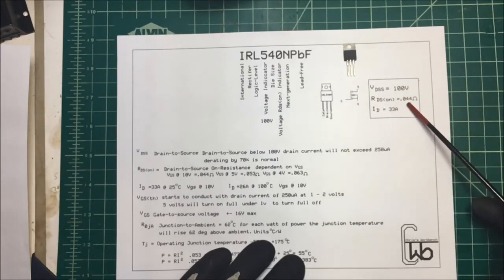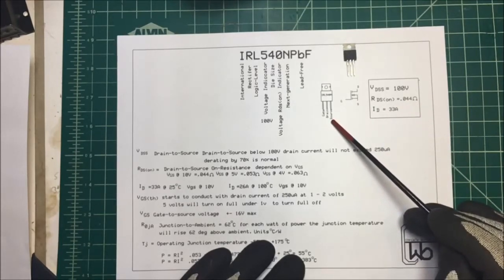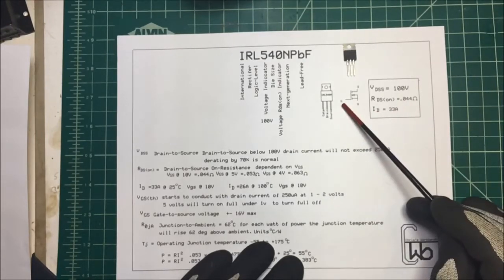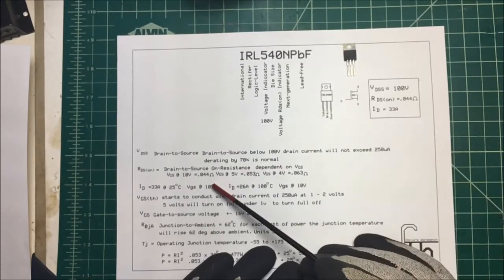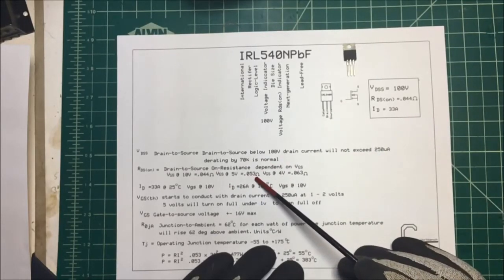This on-resistance is 0.044 ohms. That's the resistance that I'm going to have between the drain and the source when it's on. But that's if I put 10 volts on the gate. If I put five volts on the gate like I want to do, it's going to be at 0.053 ohms.